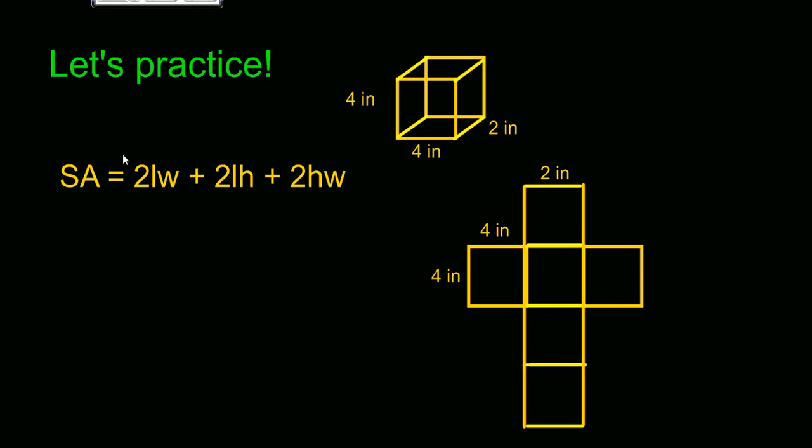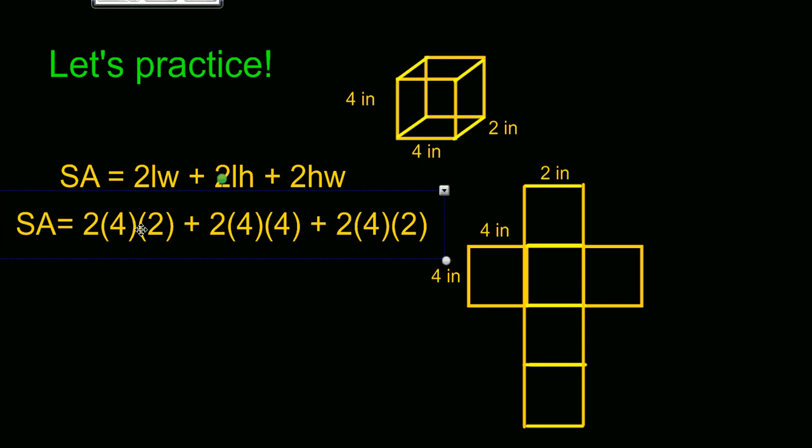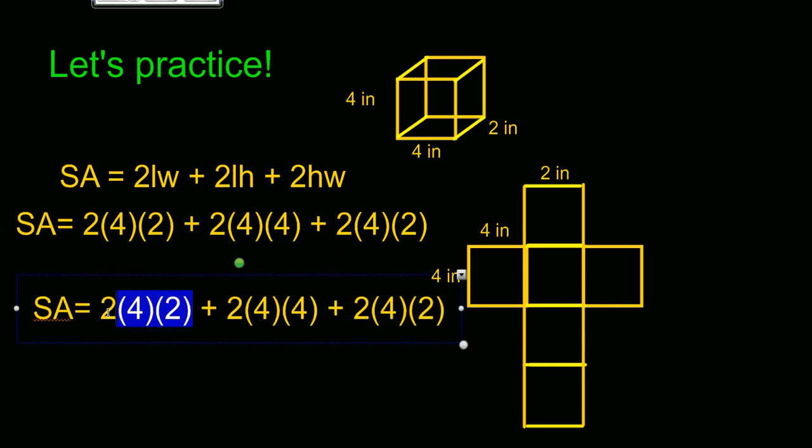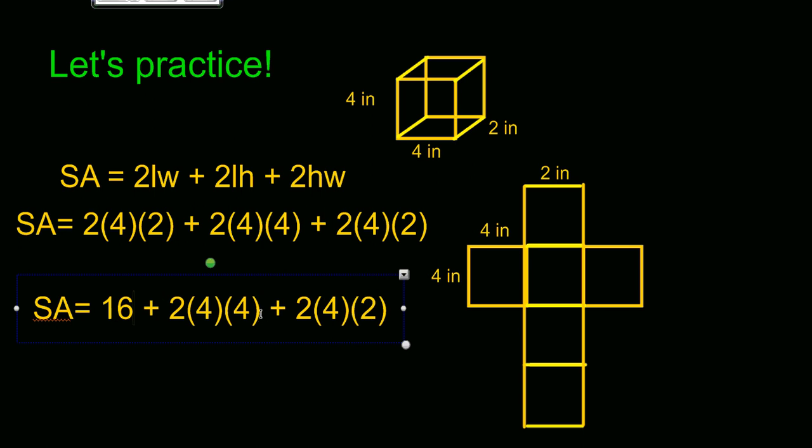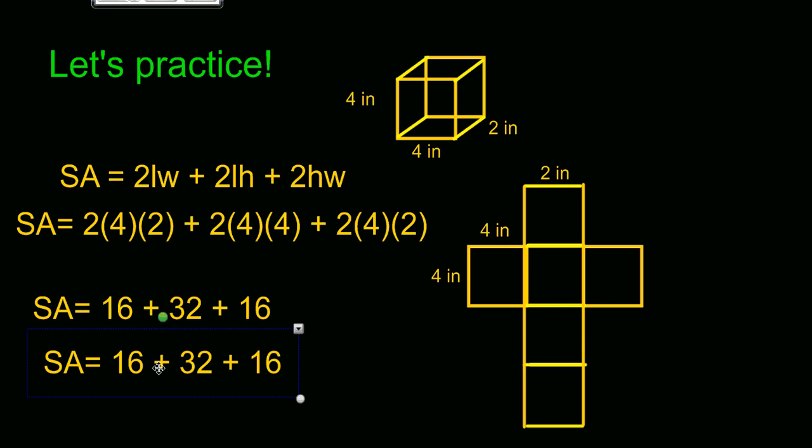Here's another one. Why don't you practice using the formula that we developed. Pause the screen and then push play to see how you did. If you plugged the numbers in correctly you should have come up with this. Now all we have to do is simplify. I'm just going to copy this and simplify 2 times 4 is 8 times 2 is 16, 2 times 4 is 8 times 4 is 32, 2 times 4 is 8 times 2 is 16 and when I add all of these together I end up with my answer which would be 64 inches squared or 64 square inches.